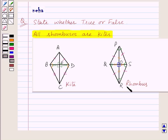Thus we got that a rhombus satisfies all the properties of a kite and thus the statement all rhombuses are kites is true.